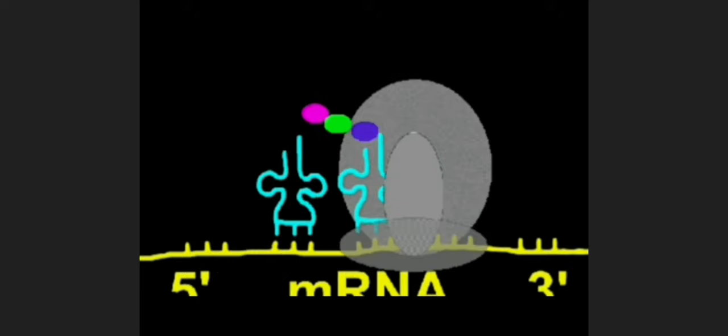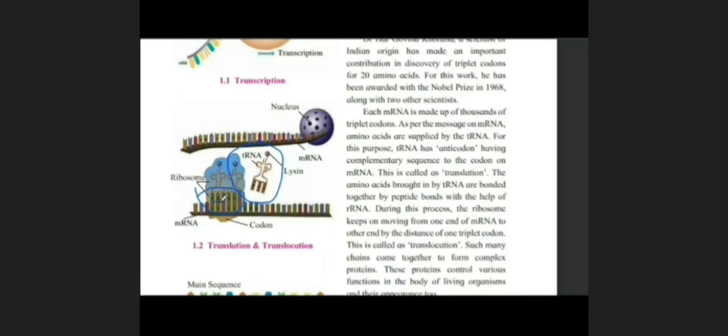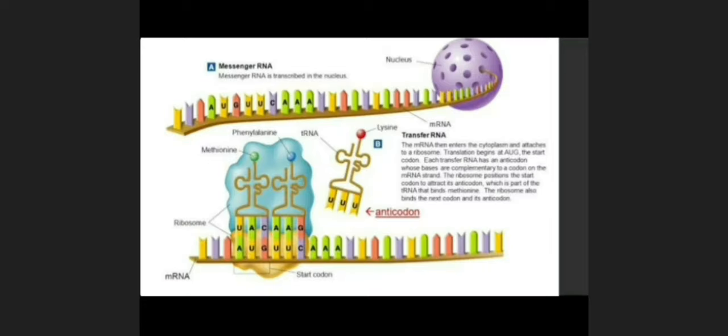You can observe that adenine pairs with uracil. Again, uracil pairs with adenine. This is the code which is present on mRNA, that is the strip on which codons are present. And tRNA compensates, pairs with that codon by anticodon. So this type of pairing, we can say codon and anticodon pairing.